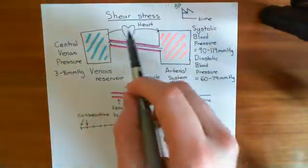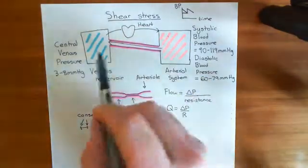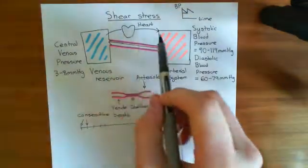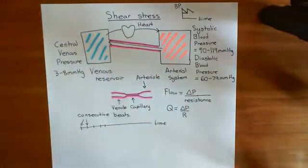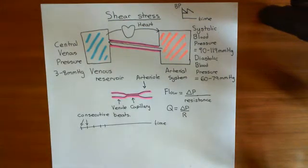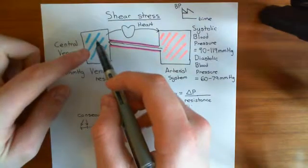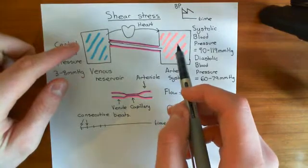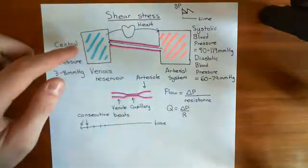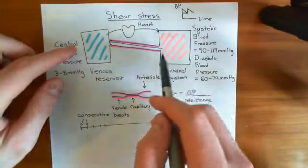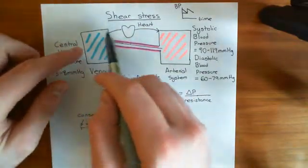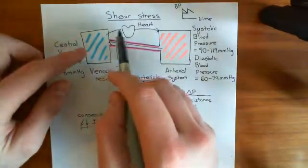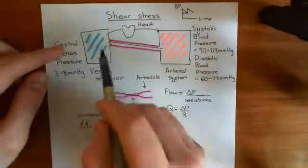At equilibrium, what will happen is the movement of blood from the venous system to the arterial system by the heart each heartbeat will match the movement of blood through the tube in the opposite direction, which occurs between consecutive heartbeats. Before that, you'll get more movement from the venous side to the arterial side, and blood will build up in the arterial system, building up the pressure difference. That will gradually raise the flow of blood back through the tube until equilibrium is reached, where the flow through the tube equals the movement of blood via the heart.